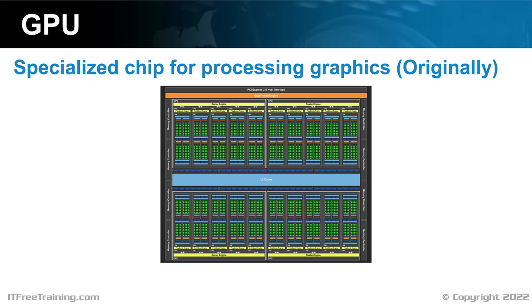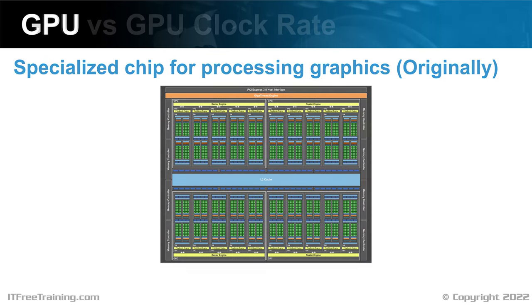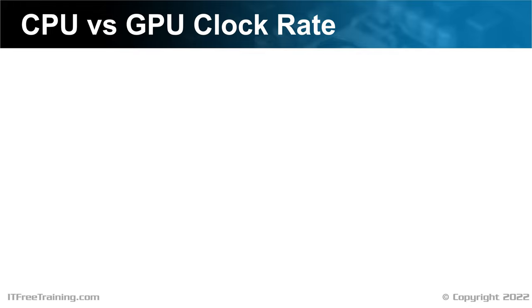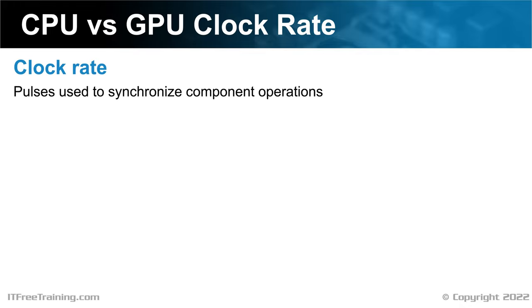I will now have a look at some of the things that make a video card work. The first is the clock rate — essentially a pulse used to synchronize component operations. The clock rate is like a metronome; all the electronics in the device work in sync with it.